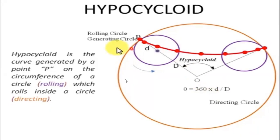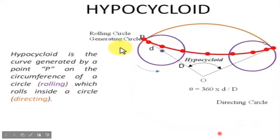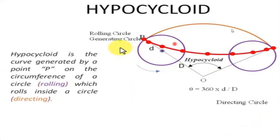We can remove unnecessary parts. The final image of the hypocycloid will look like this — it is the curve traced, and it's just the inverse or opposite of the epicycloid. In an epicycloid the curve appears above, but in a hypocycloid, the curve appears below.